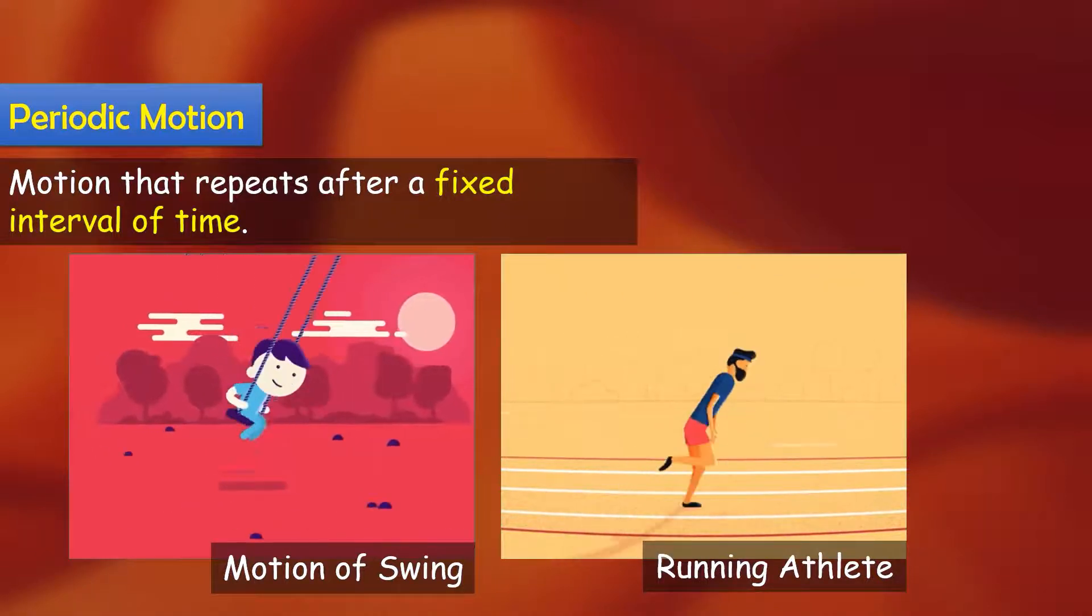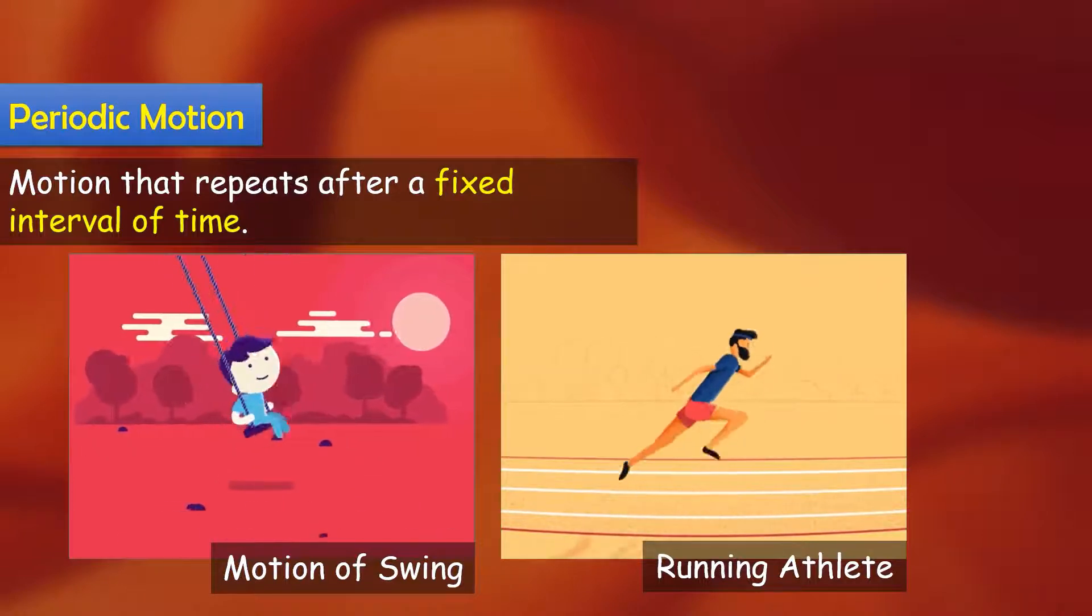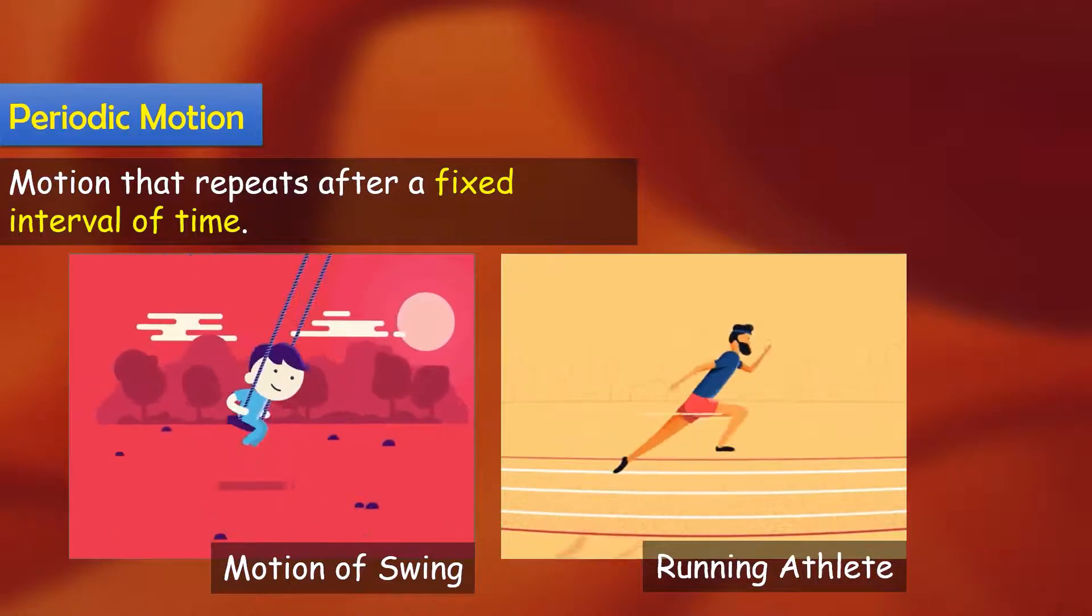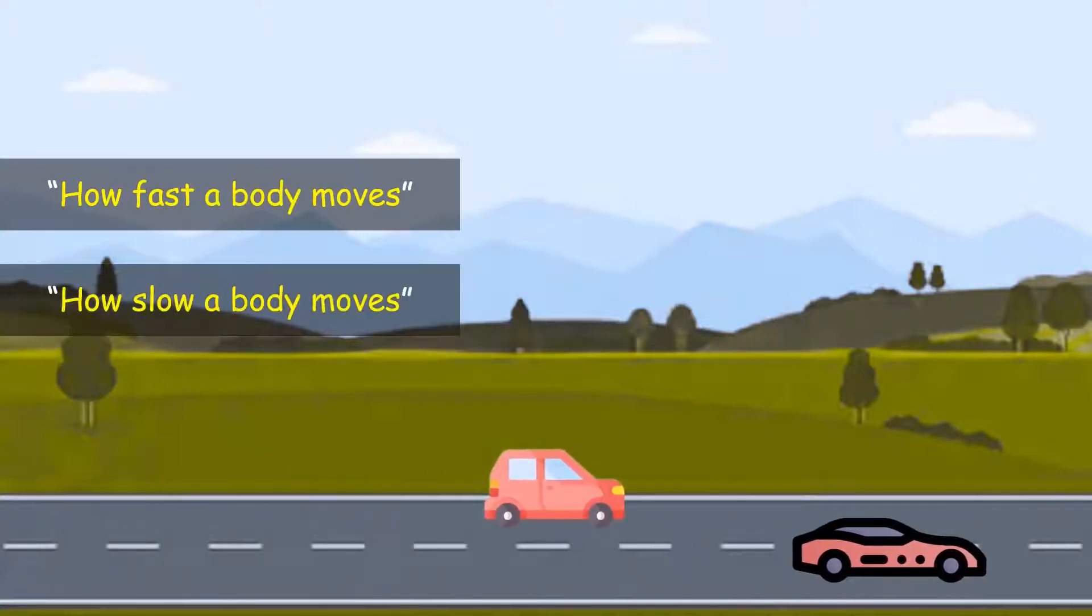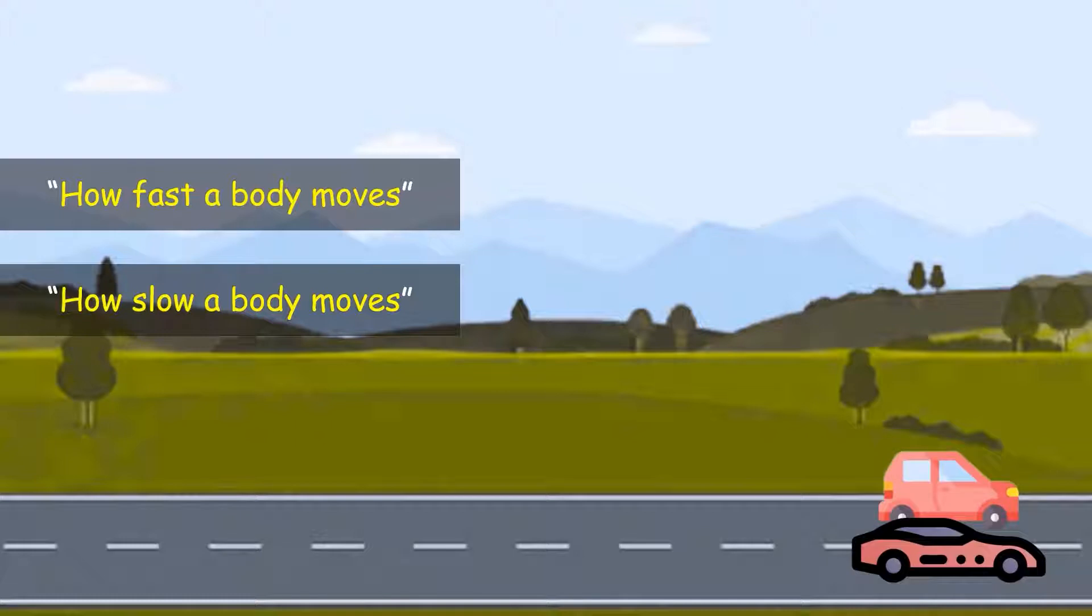In this chapter, we need to determine what type of motion, how slow or how fast. For example, if you see two cars, you might say that car is faster.